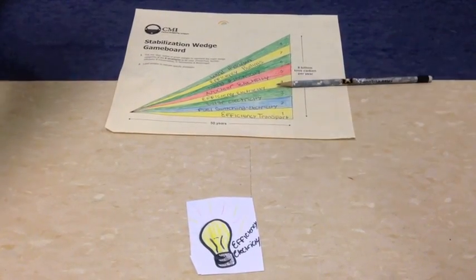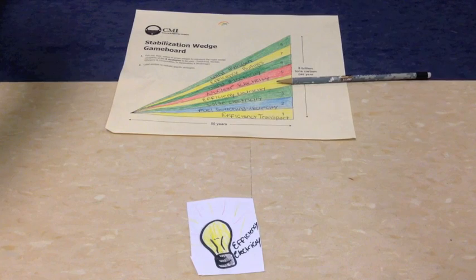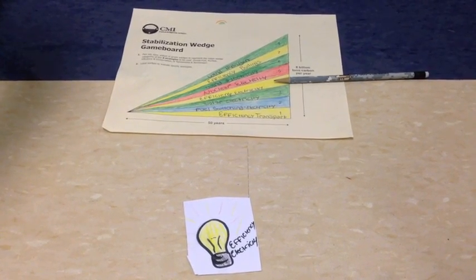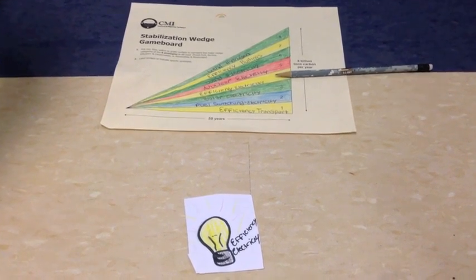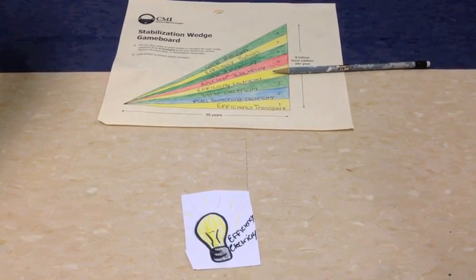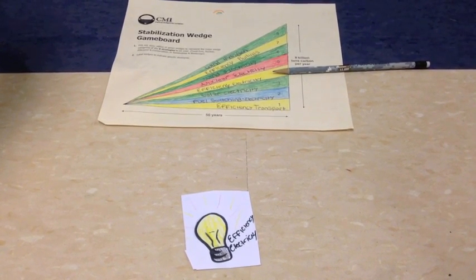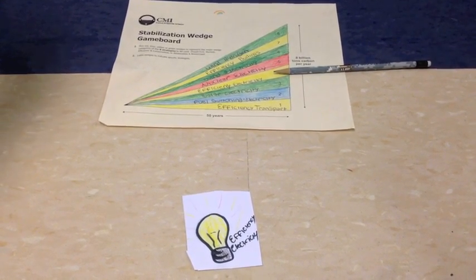Our fourth wedge is efficiency electricity. This wedge helps with electricity production and is also inexpensive with one dollar sign. The challenges would be increased plant costs. This method was chosen because one wedge could come from raising plant efficiency from 40% to 60%.